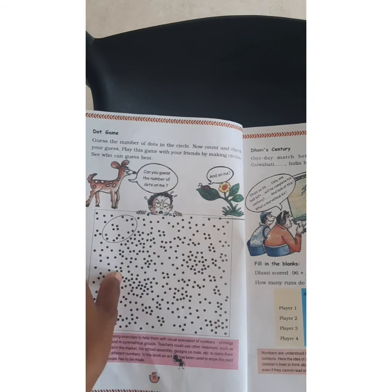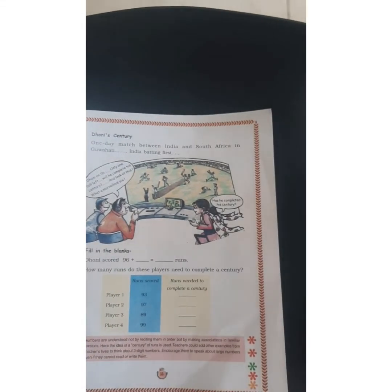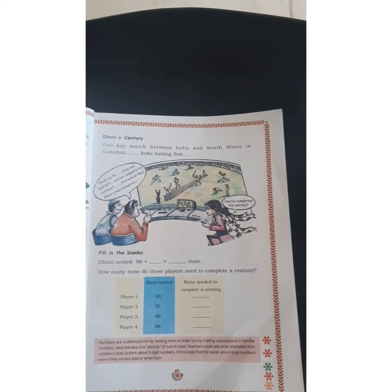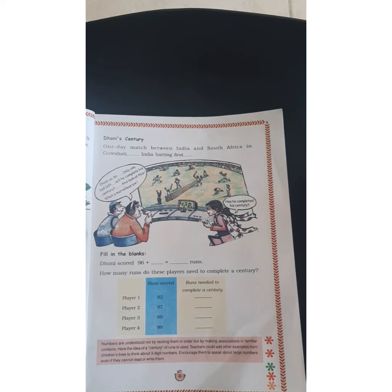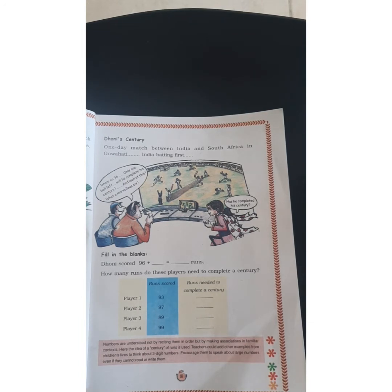Dhoni's century. Page number 18, look at that. One day match between India and South Africa. India batting first. Dhoni on 96, only one ball left. Will he complete his century?